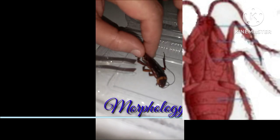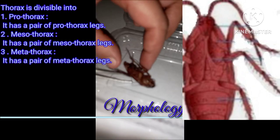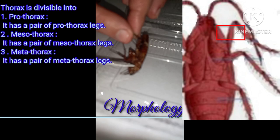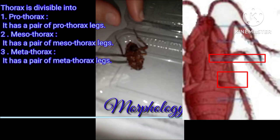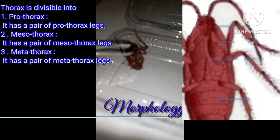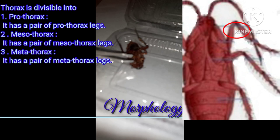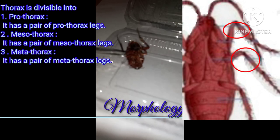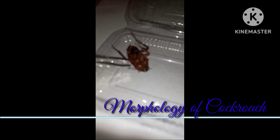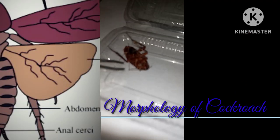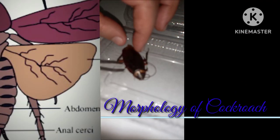Its thorax is divisible into prothorax, mesothorax, and metathorax. Each thorax segment has its corresponding pair of appendages. Prothorax has a pair of prothoracic legs, mesothorax has a pair of mesothoracic legs, and metathorax has a pair of metathoracic legs. The mesothorax also has two pairs of wings.